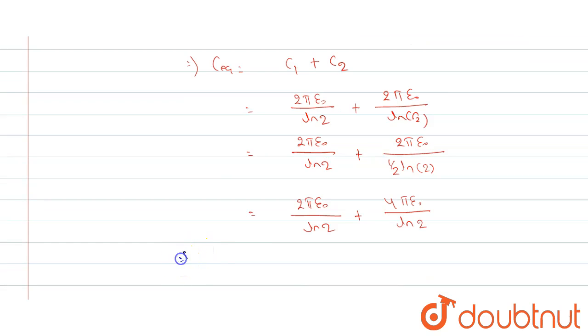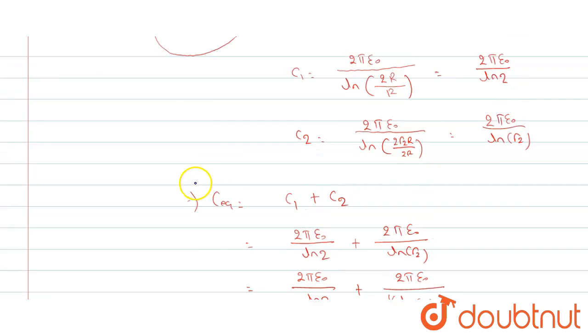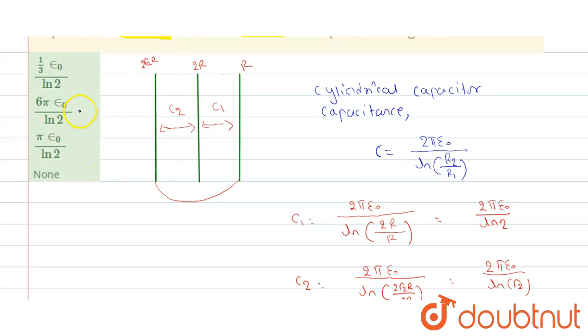That implies we get the equivalent capacitance equals 6π ε₀ divided by ln of 2. So our correct option will be option 2.